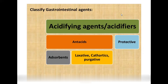Antacids reduce acid release. Acidifying agents increase acidity. After antacids and absorbents, proper food absorption occurs — vitamins, minerals, and intrinsic factor are absorbed. HCl also converts ferric ions to ferrous ions.